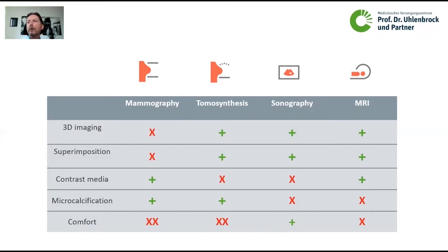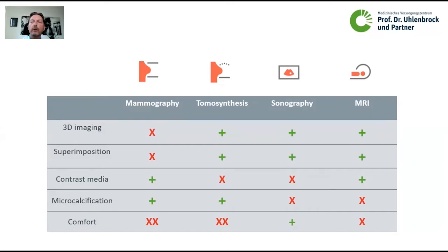Thirdly, sonography — ultrasound of the breast. This is 3D imaging without any superimposition, but we can't use contrast media and we don't see anything of microcalcifications. It is also dependent on the examiner whether it has good comfort or not. Then MRI: this is definitely 3D imaging without any superimposition. We can — and should — use contrast media to give it a functional aspect. But we won't see anything of our microcalcifications, and the examination takes at least 20 to 30 minutes.